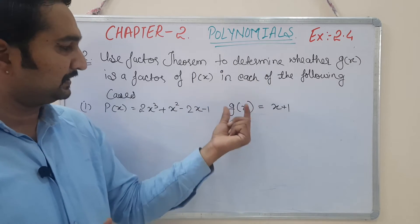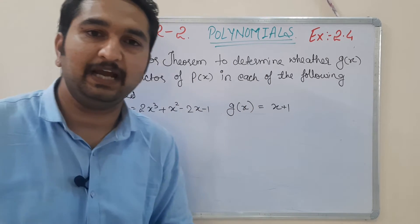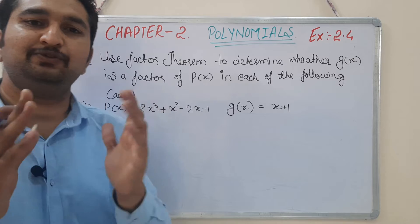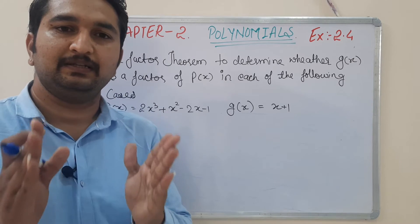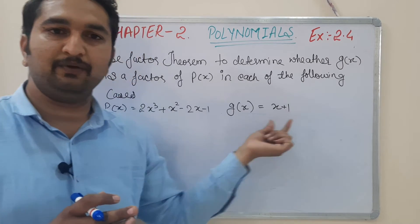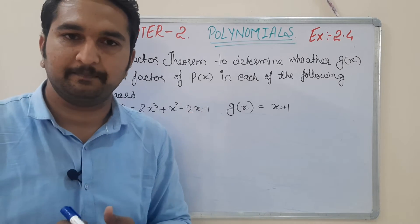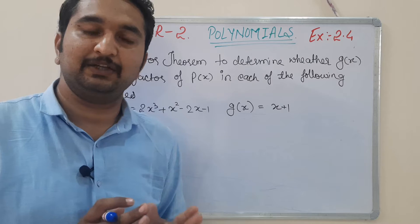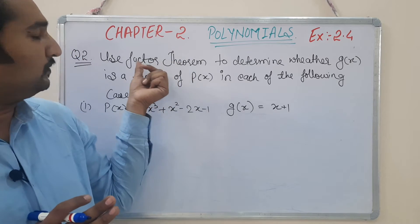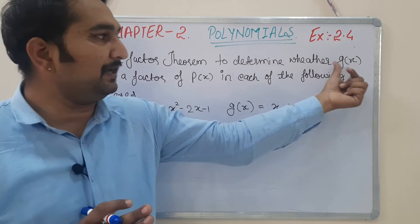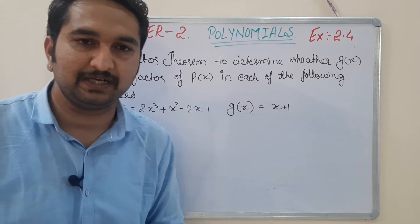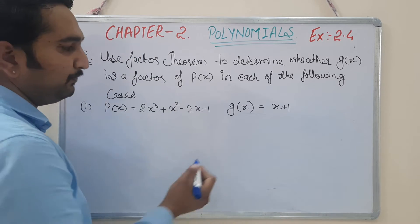We have to determine whether g(x) is a factor of p(x). We will put the value into p(x), and if the final answer we get is 0, then we will say that g(x) is a factor of p(x). Let me repeat: use the factor theorem to determine whether g(x) is a factor of p(x). We will put the value of x (found from g(x) = 0) into p(x).